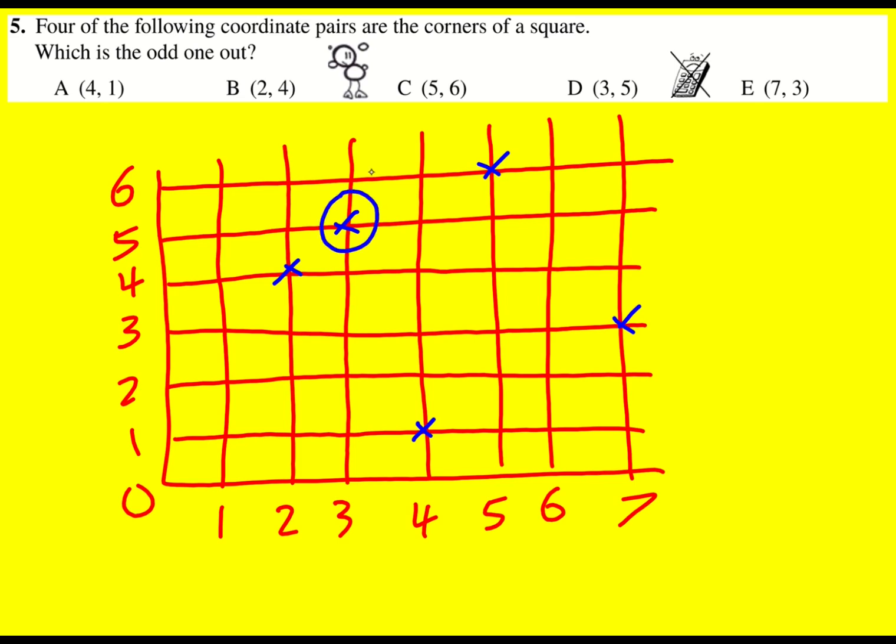And you can immediately see there's something going on with this one. This one does not look right. That's going to be the answer because you can form a square from the rest of them going like along 3 and up 2.